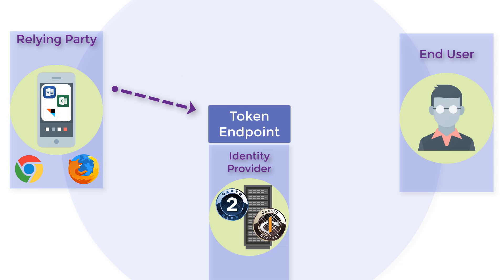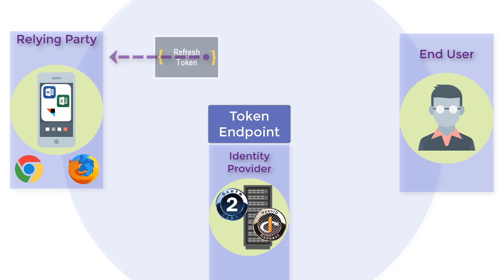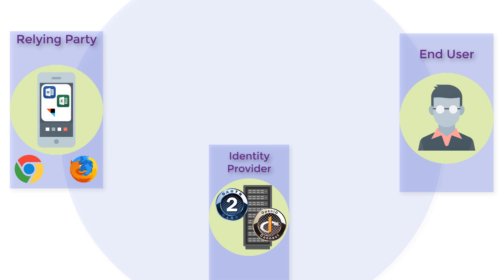The token endpoint authenticates the client application. It also exchanges the authorization code from the authorization endpoint for an ID token, an access token, and optional refresh token. The user info endpoint is an OAuth 2.0 protected resource that is used by the identity provider to return consented user information or claims to the client application, provided that a valid access token is presented.